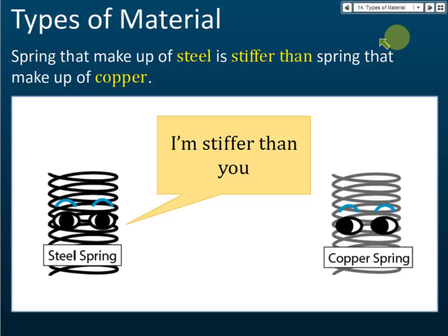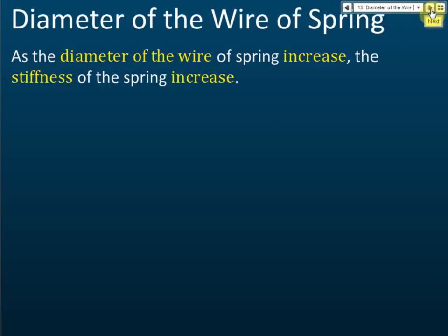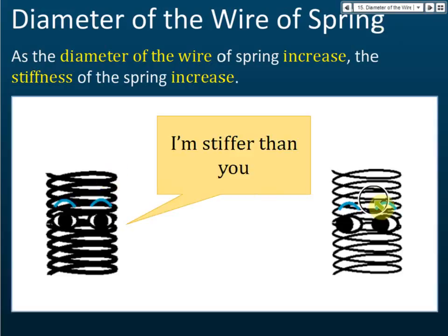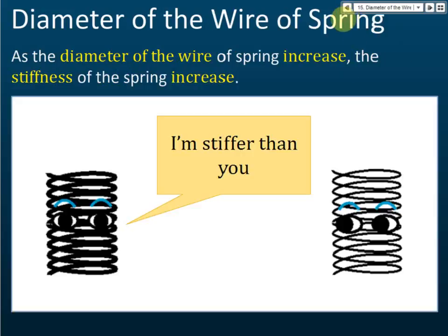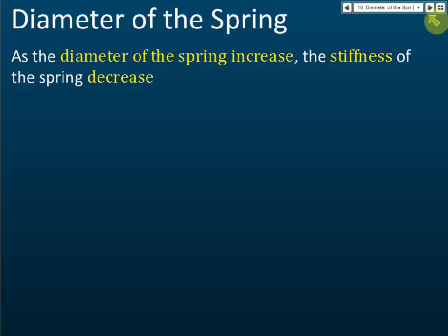The second factor is the diameter of the wire of the spring. As the diameter of the wire increases, the stiffness of the spring increases. Compare this thick wire with this thin wire — the thicker wire has a bigger diameter, so if the diameter of the wire is bigger, the stiffness will increase compared to a thin wire.